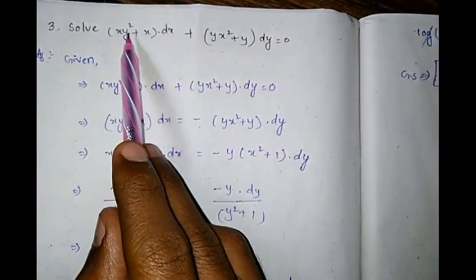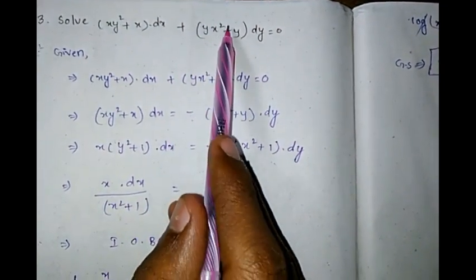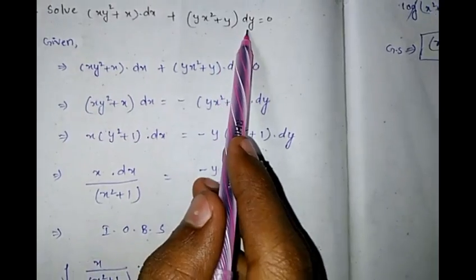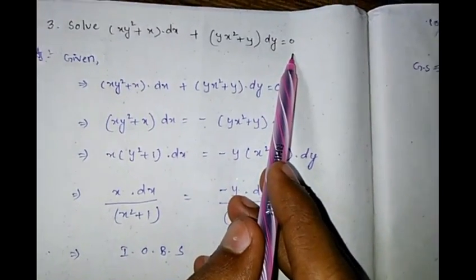Third problem: Solve (xy² + x)dx + (yx² + y)dy = 0.